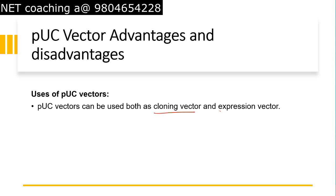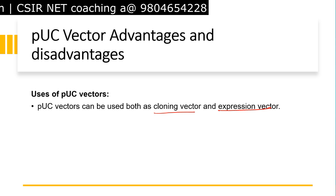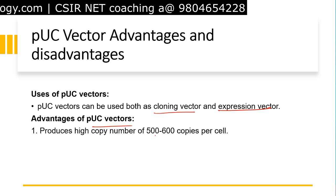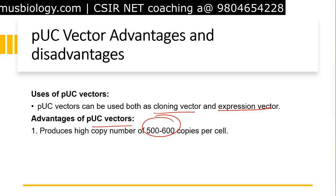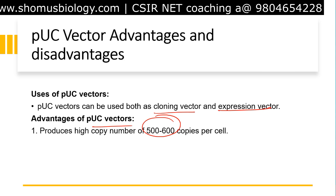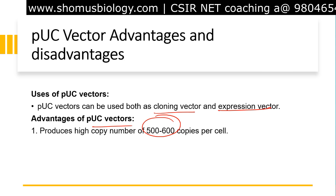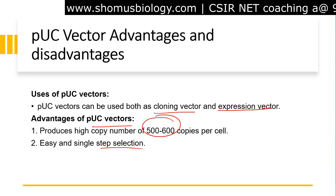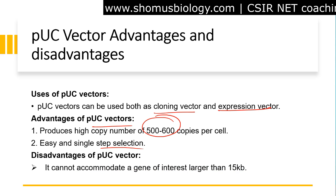pUC vectors can be used both as a cloning vector and as an expression vector — same as pBR322. The advantages: they produce a high copy number of 500 to 600 copies per cell. In pBR322, the copy number was restricted, and although it can be increased by treating with chloramphenicol, with pUC vectors no such treatment is needed. Easy and single-step selection processes are involved.